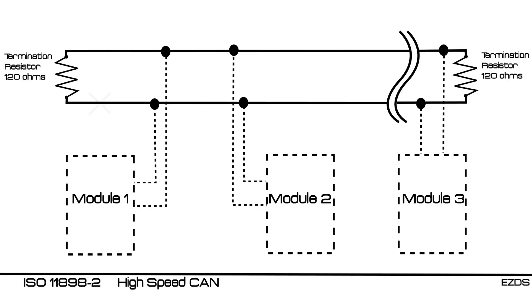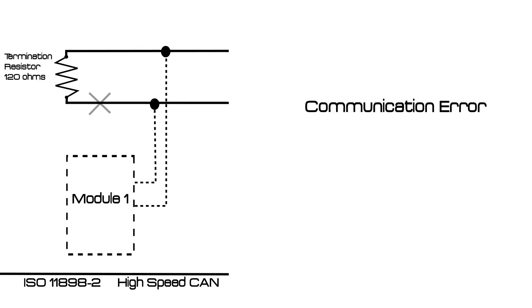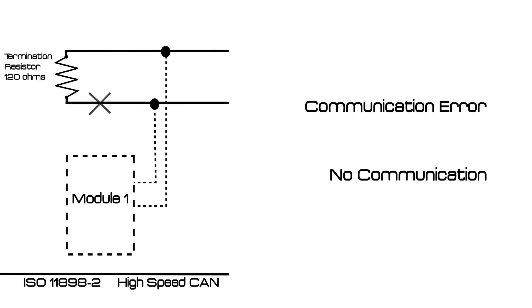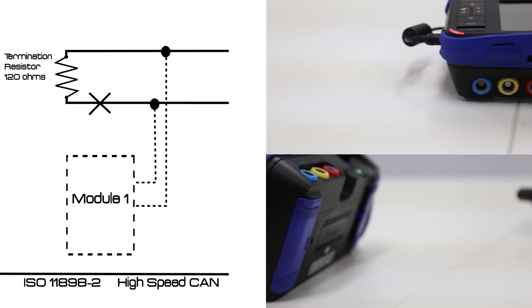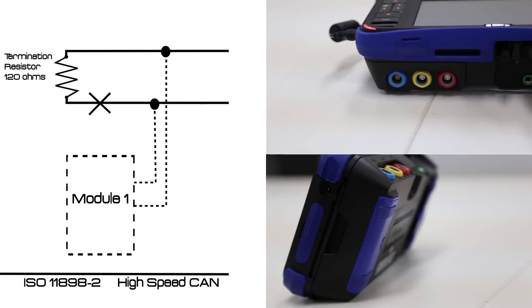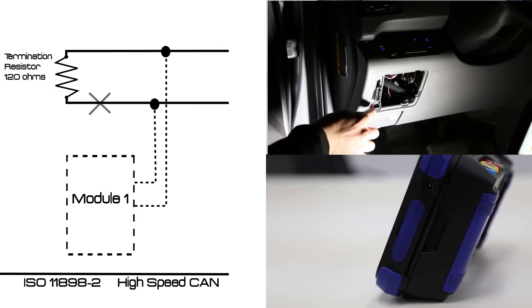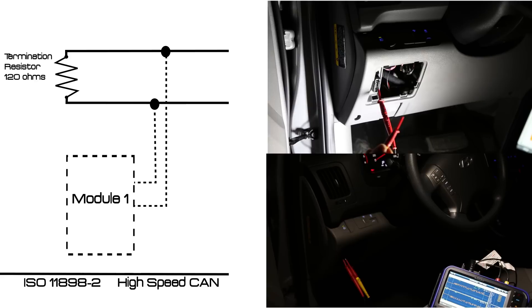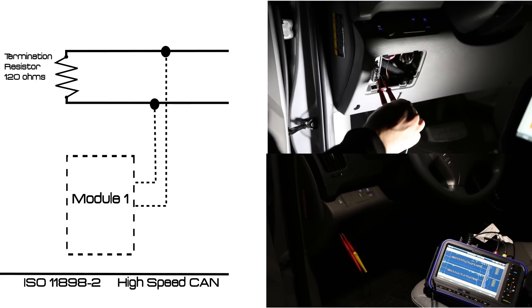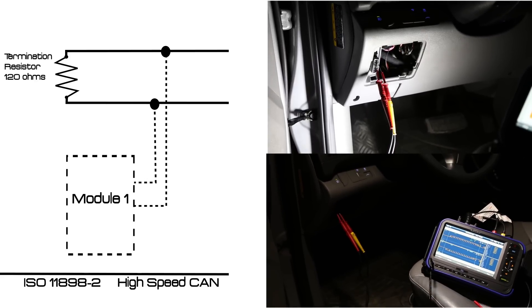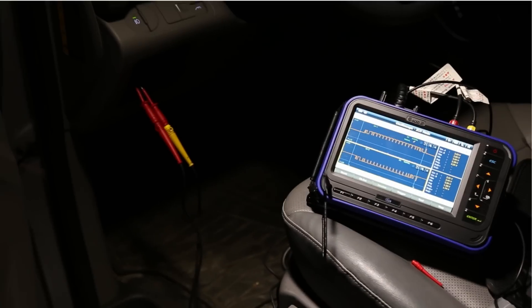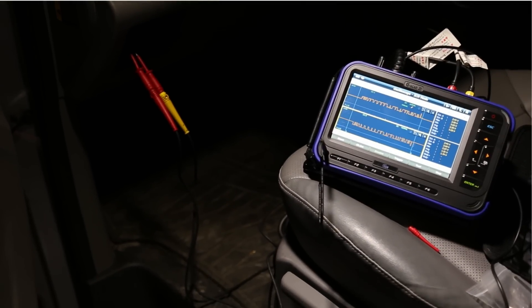When there is a problem in the CAN line, symptoms could range from communication errors between modules to completely no communication with a scan tool. You may diagnose it manually with an oscilloscope, but probing onto cracked pins on OBD ports and analyzing graphs can sometimes be cumbersome. But what if your scan tool can check the CAN line with just the DLC cable connected?